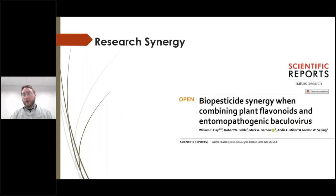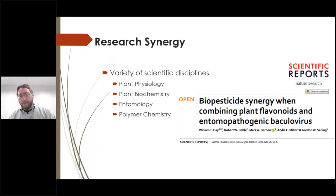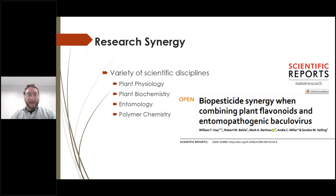This research unit comprises geneticists, biochemists, chemists, physiologists, mycologists, and a wide variety of scientific disciplines working together to improve food safety and security. We are one unit out of seven at this facility with 175 scientists and research staff. For the first manuscript — recently published in Nature Scientific Reports on biopesticide synergy when combining plant flavonoids and entomopathogenic baculovirus — I worked with four different units, including a plant physiologist, biochemist, entomologist, and polymer chemist.